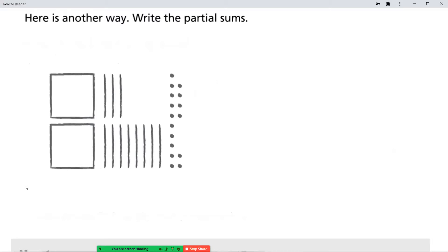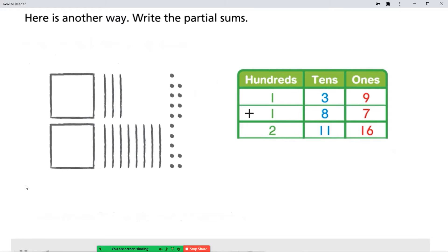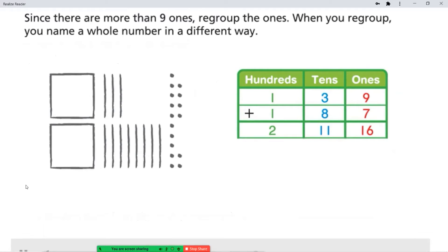Here is another way. Write the partial sums. Since there are more than 9 ones, regroup the ones. When you regroup, you name a whole number in a different way. 16 ones equals 1 ten plus 6 ones.